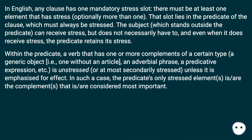In English, any clause has one mandatory stress slot — there must be at least one element that has stress, optionally more than one. That slot lies in the predicate of the clause, which must always be stressed. The subject, which stands outside the predicate, can receive stress but does not necessarily have to, and even when it does receive stress, the predicate retains its stress.